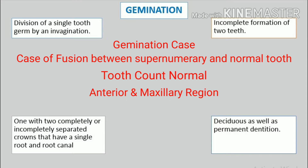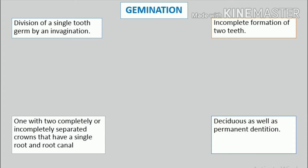Higher frequency in the anterior and maxillary regions. The term twinning has sometimes been used to designate the production of equivalent structures by division, resulting in one normal and one supernumerary tooth.